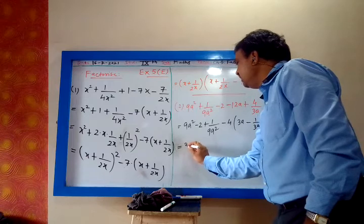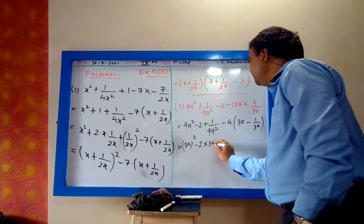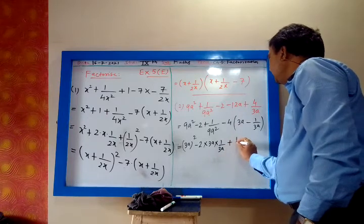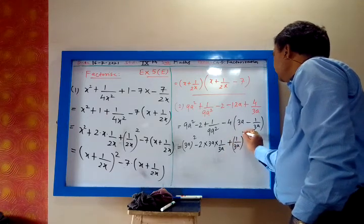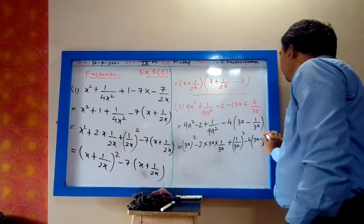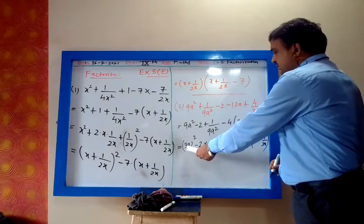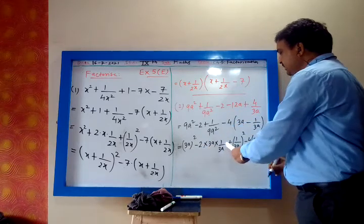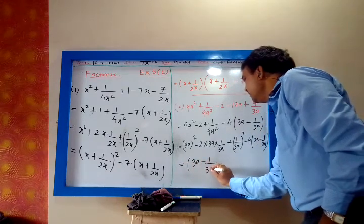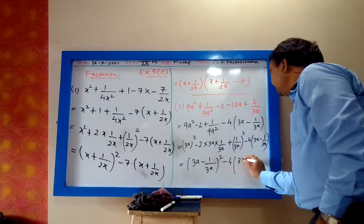9a² I can write as (3a)². Then minus 2 I can write as minus 2·(3a)·(1/(3a)), the 3a gets cancelled. 1/(9a²) I can write as (1/(3a))². Minus 4·(3a − 1/(3a)). The first three terms are of the type a² − 2ab + b² = (a−b)², giving (3a − 1/(3a))².